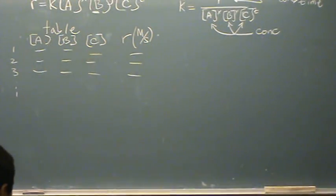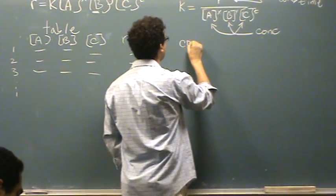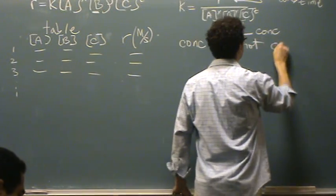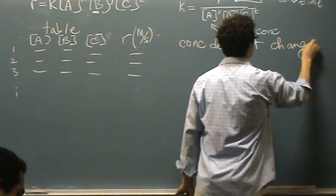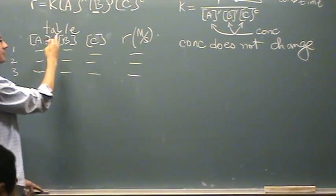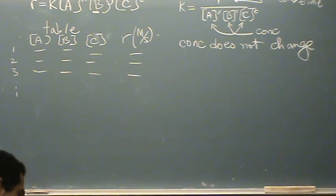So you always follow the same procedure. First you look for any 2 of the experiments where the concentration does not change. Once you find a place where the concentration doesn't change, then you have to do that for X, for Y, for Z, or for A, B, and C. For each case you need to find places where the concentration doesn't change.